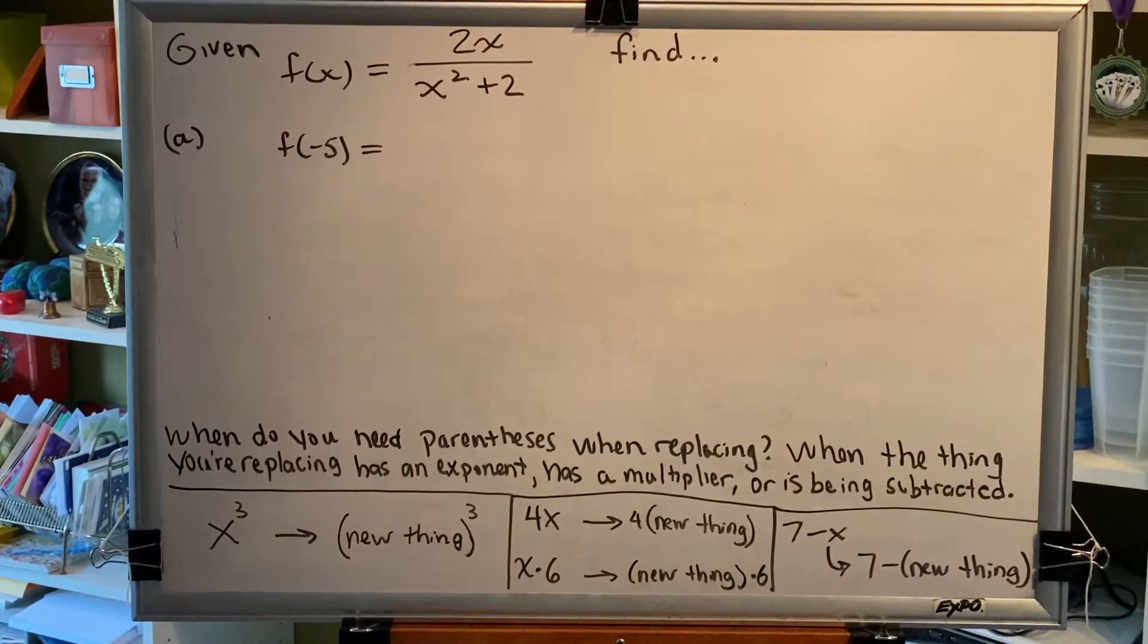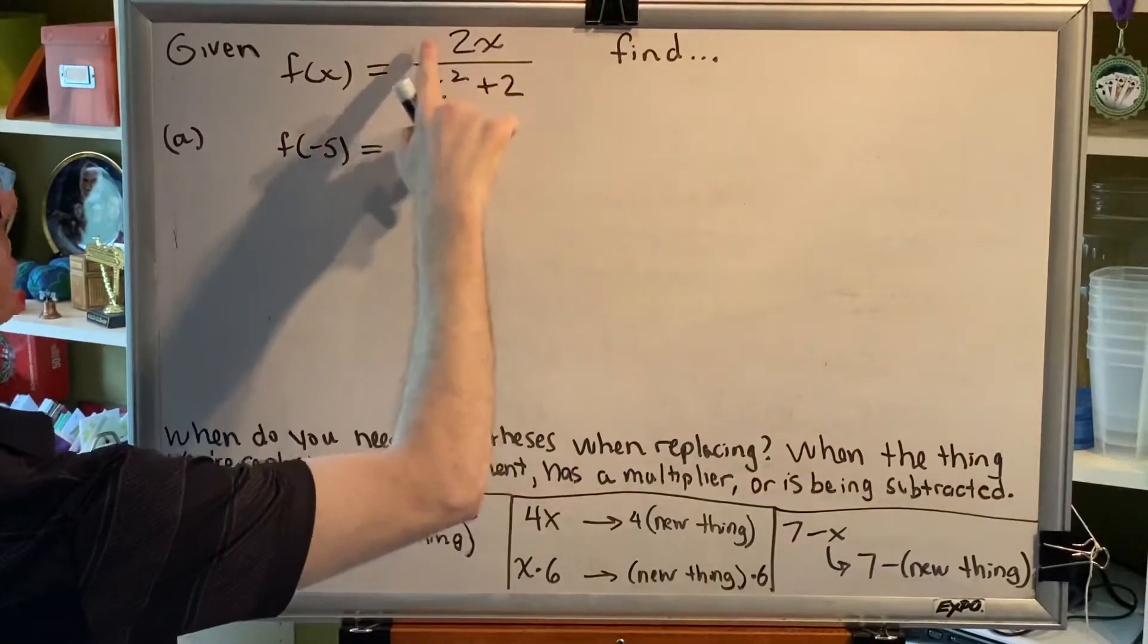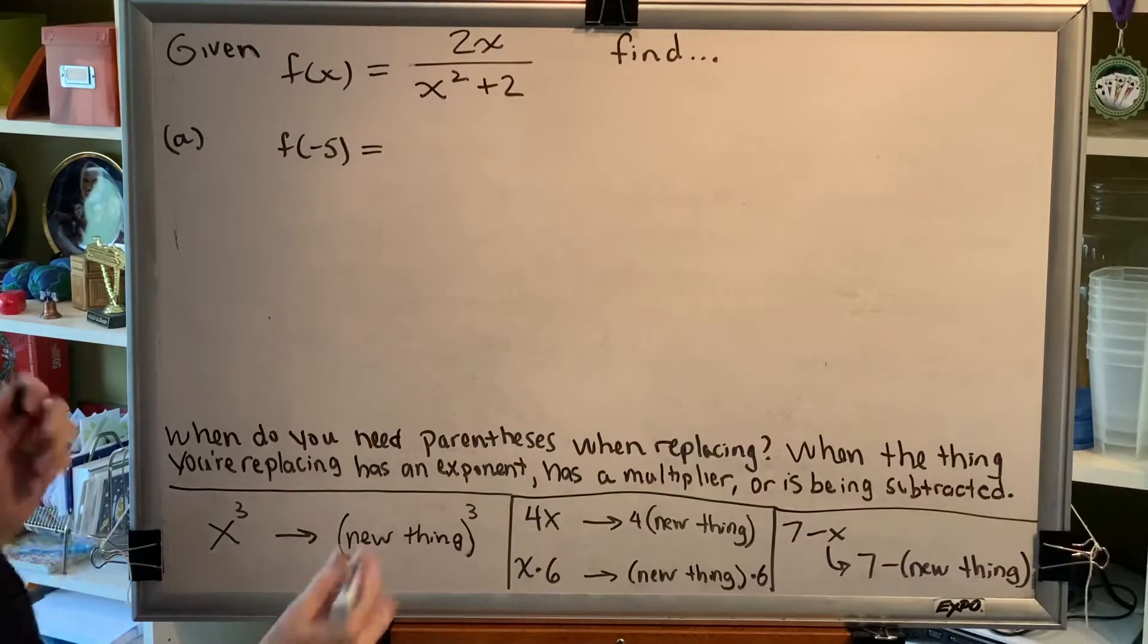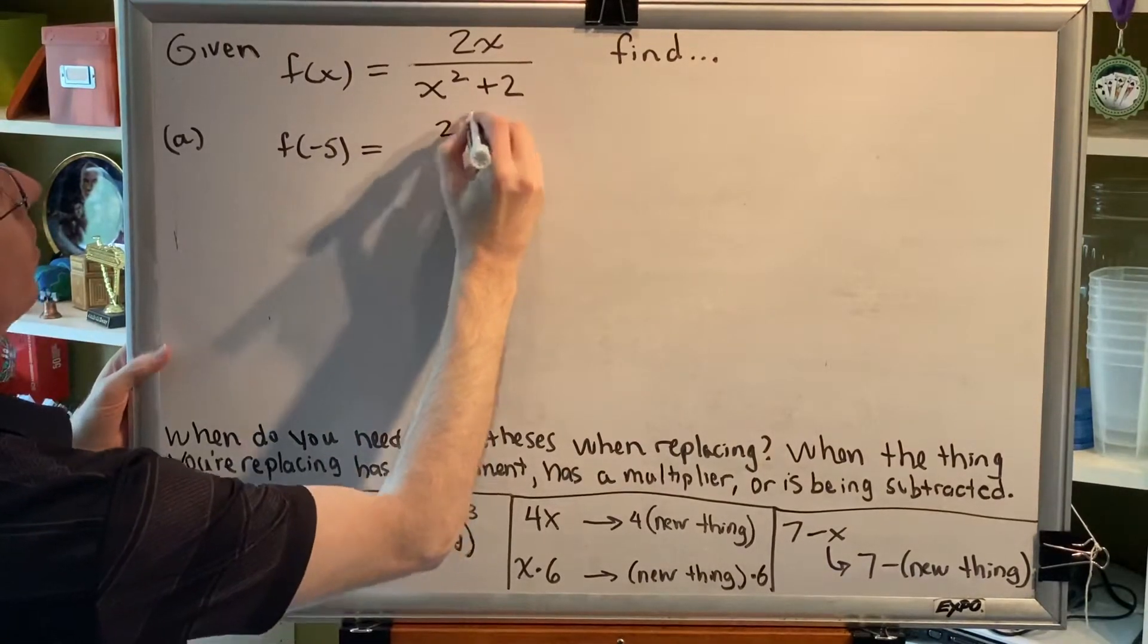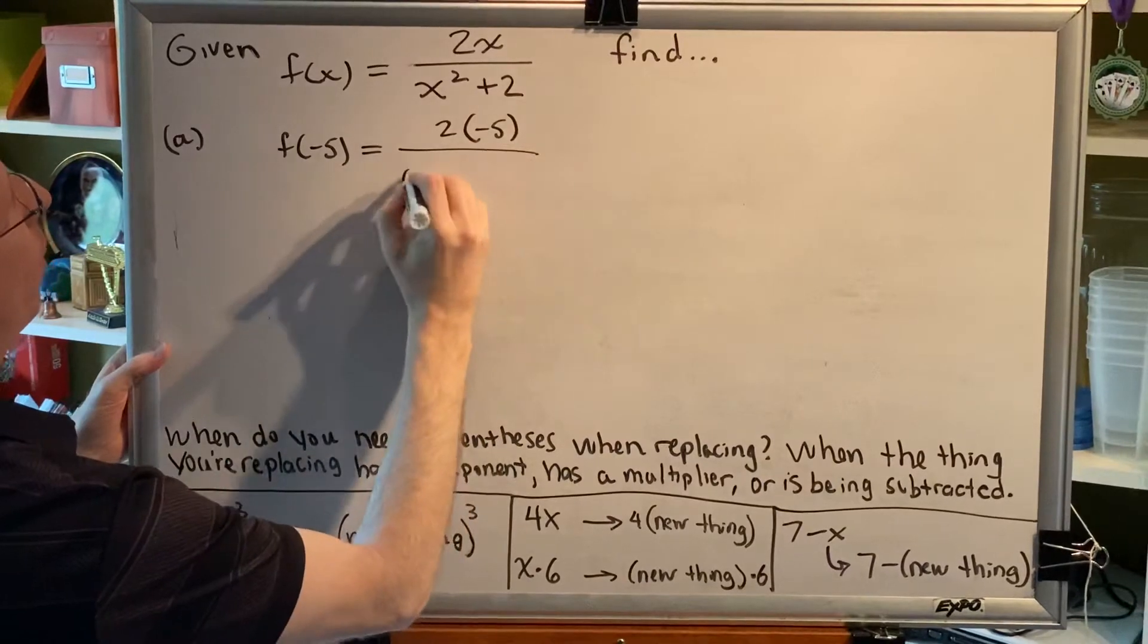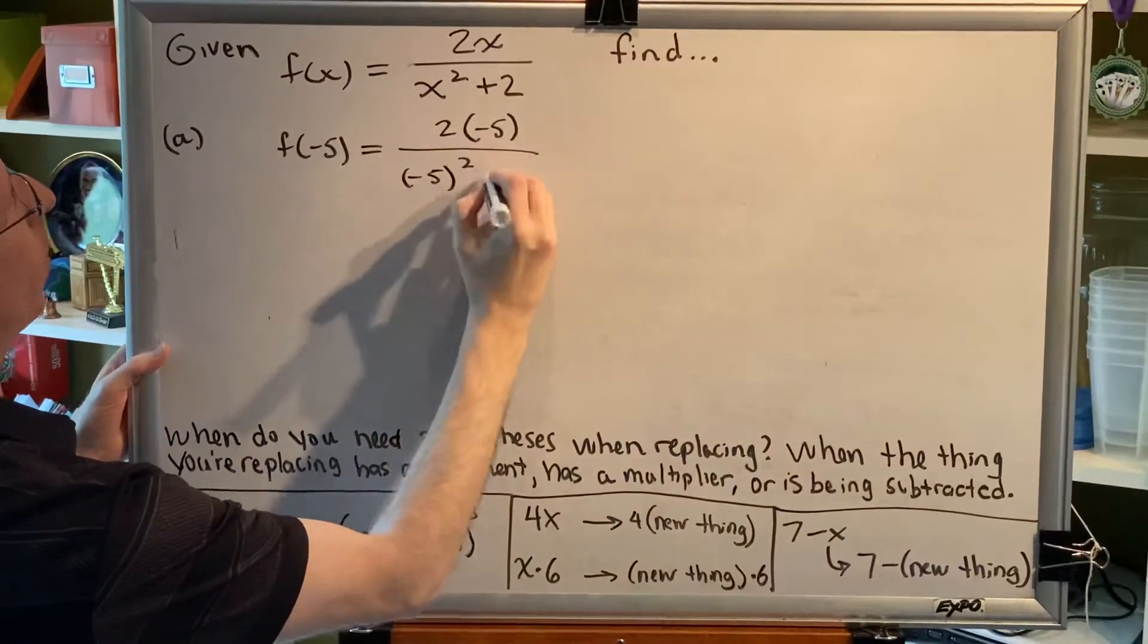Part a says find f of negative 5. Well, this x has a multiplier and this x has an exponent, so when I replace the x with negative 5, parentheses will be required. So I'll have 2 times negative 5 in parentheses over negative 5 in parentheses squared plus 2.